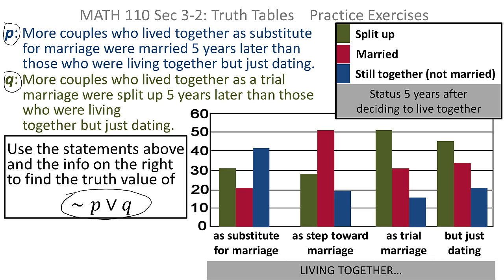For each statement, if it's true, we put in a T; if it's false, we put in an F. So in theory it's very simple. Don't try to bite off too much information at once. If we're trying to find the truth value of this statement, then what we should do is focus first on P, decide if it's true or false, and then do the same for Q.